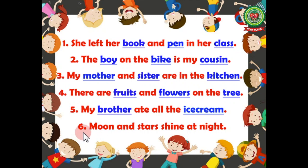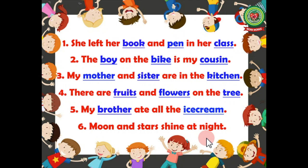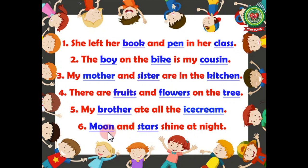Now let's come to number six: moon and stars shine at night. Just identify the nouns here and underline them. Let's check the answer. Moon — name of a thing, so noun. Stars — name of a thing, so noun. Therefore we will underline moon and stars as they are the naming words.